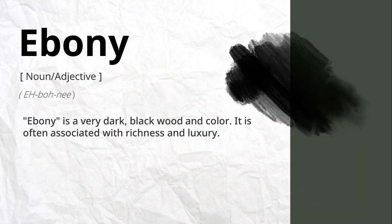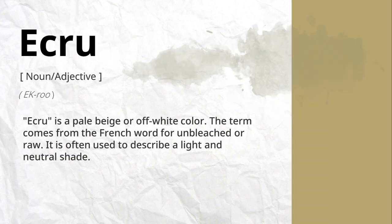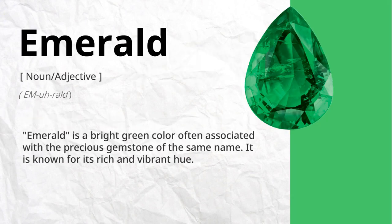Ebony is a very dark, black wood and color. It is often associated with richness and luxury. Ecru is a pale beige or off-white color. The term comes from the French word for unbleached or raw. It is often used to describe a light and neutral shade.